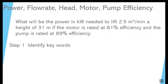Now let's take a look at the example question. What will be the power in kilowatts — notice, in kilowatts, not horsepower — needed to lift 2.5 cubic meters per minute a height of 31 meters, if the motor is rated at 81% efficiency and the pump is rated at 89% efficiency? The flow rate is 2.5 cubic meters per minute, which is not the required unit of liters per second, so a conversion will have to be done.